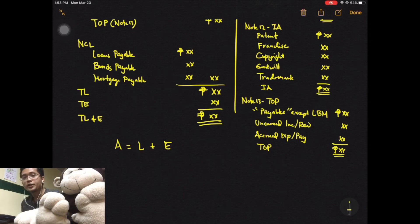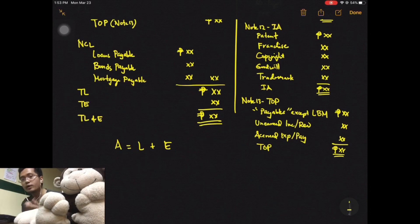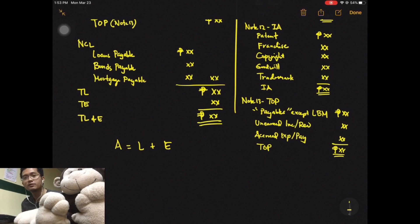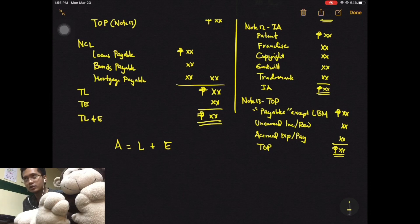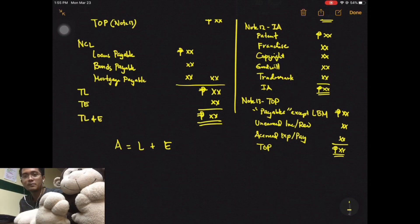We now have four statements: income statement, statement of equity, balance sheet, and notes. The last one is the statement of cash flows, which was already uploaded previously and will be linked in the description below — completing all five statements. After an exercise on these statements, we'll move on to financial statement analysis covering traditional and contemporary approaches: horizontal, vertical, trend analysis, and financial ratios, which will be discussed in FABN.